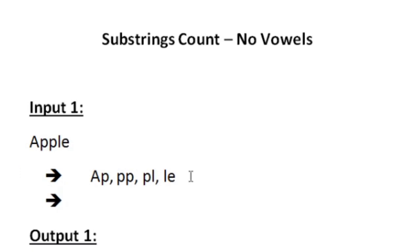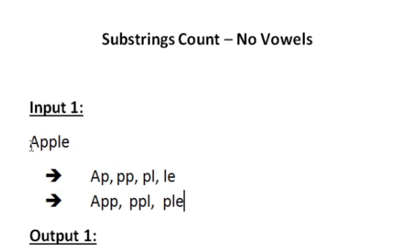Now let us generate all possible substrings of length 3. The first substring would be 'app', then 'ppl', and then 'ple'. We can't start from 'l' since there are only two characters remaining, so we can't form a substring of length 3 from there.